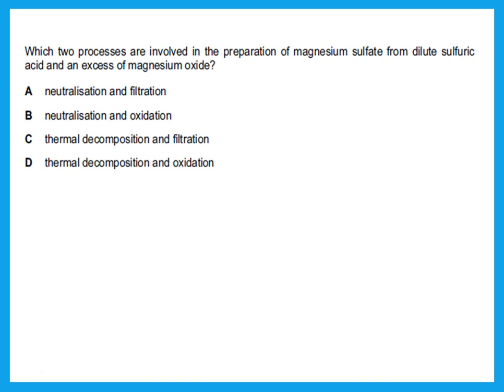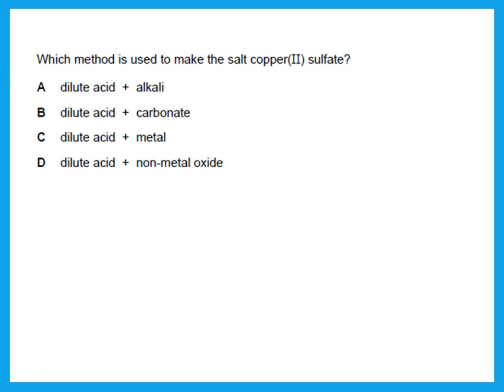This question asks which two processes are involved in preparing magnesium sulfate from dilute sulfuric acid and excess magnesium oxide. Excess magnesium oxide means we're using the neutralization method. The answer involves neutralization and filtration because magnesium oxide is insoluble. To make copper sulfate: can we use dilute acid plus alkali? An alkali is a base that dissolves in water, but copper oxide does not dissolve in water — so it is not an alkali.